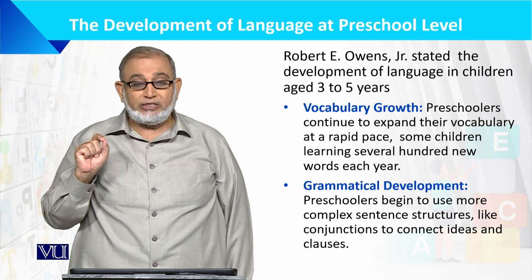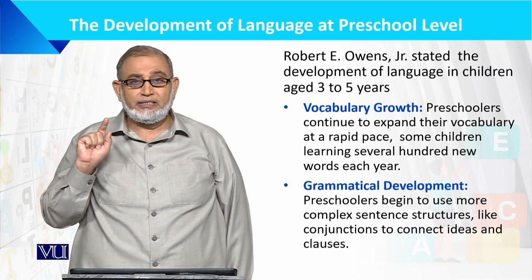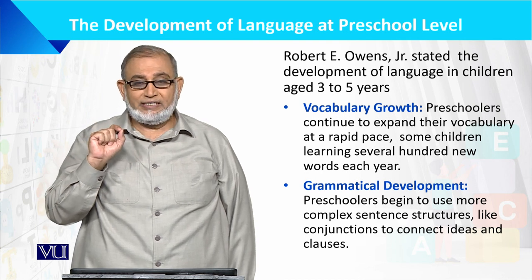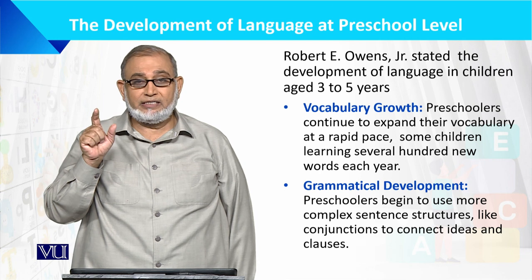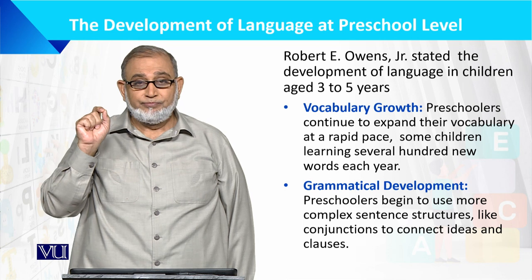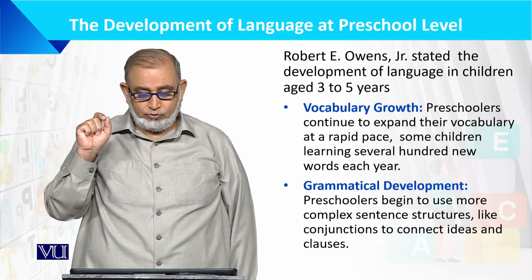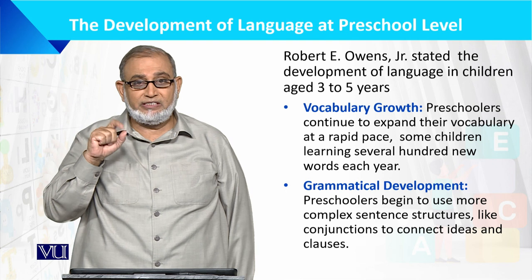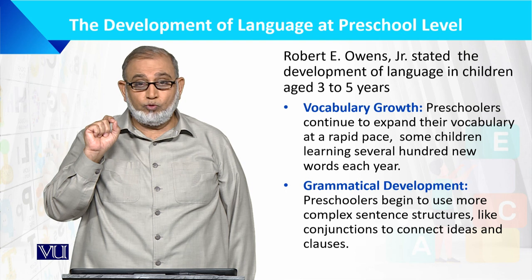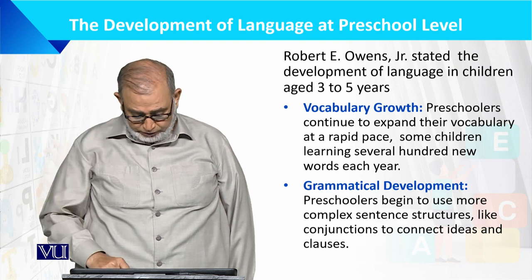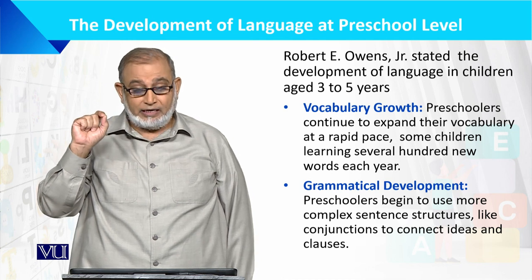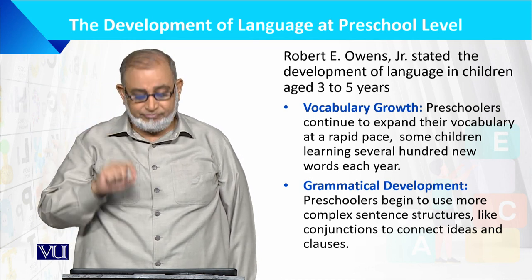Then there is grammatical development. As preschoolers' age increases beyond three years, they move from single words to double words, then through the telegraphic stage to three-word utterances, and so on. In this way, they gradually learn complex sentence structures and grammatical rules, applying them to connect ideas, clauses, and interjection words.